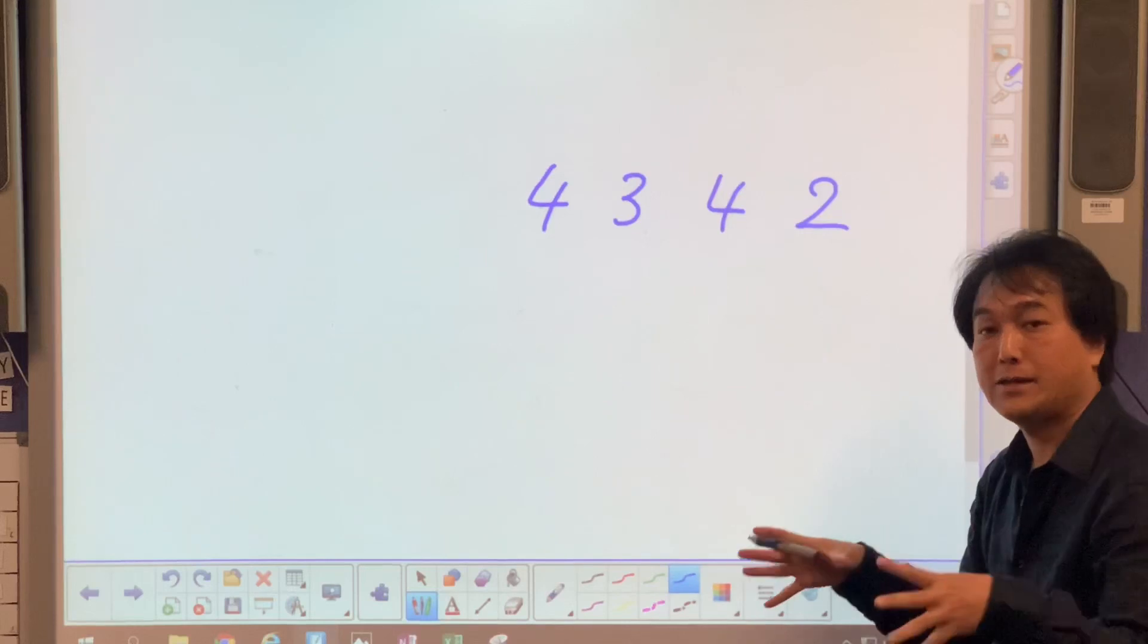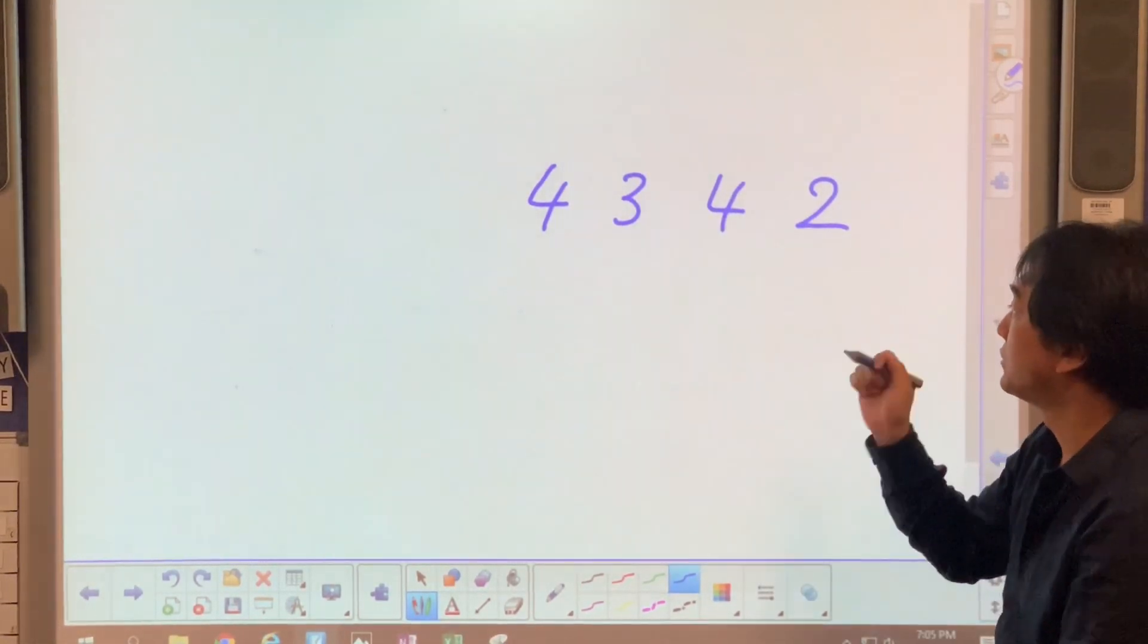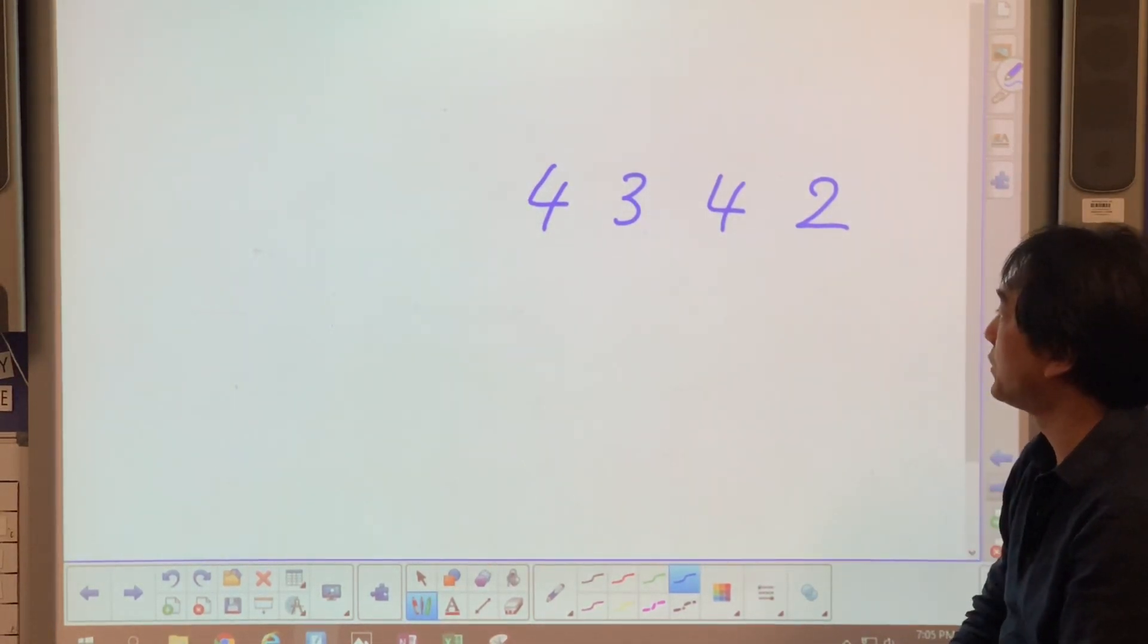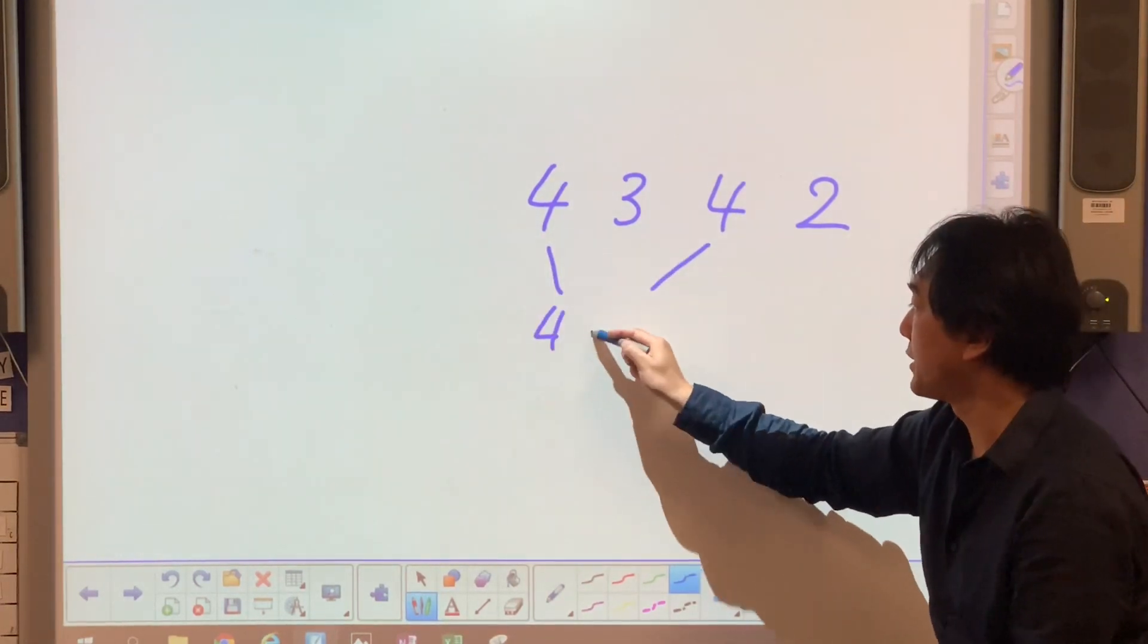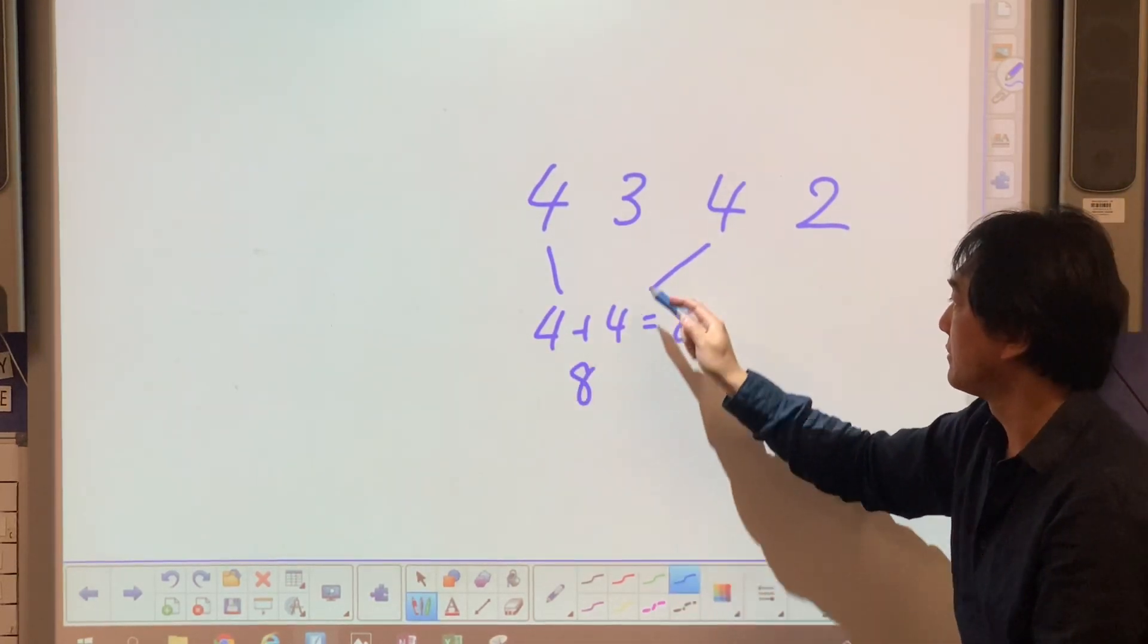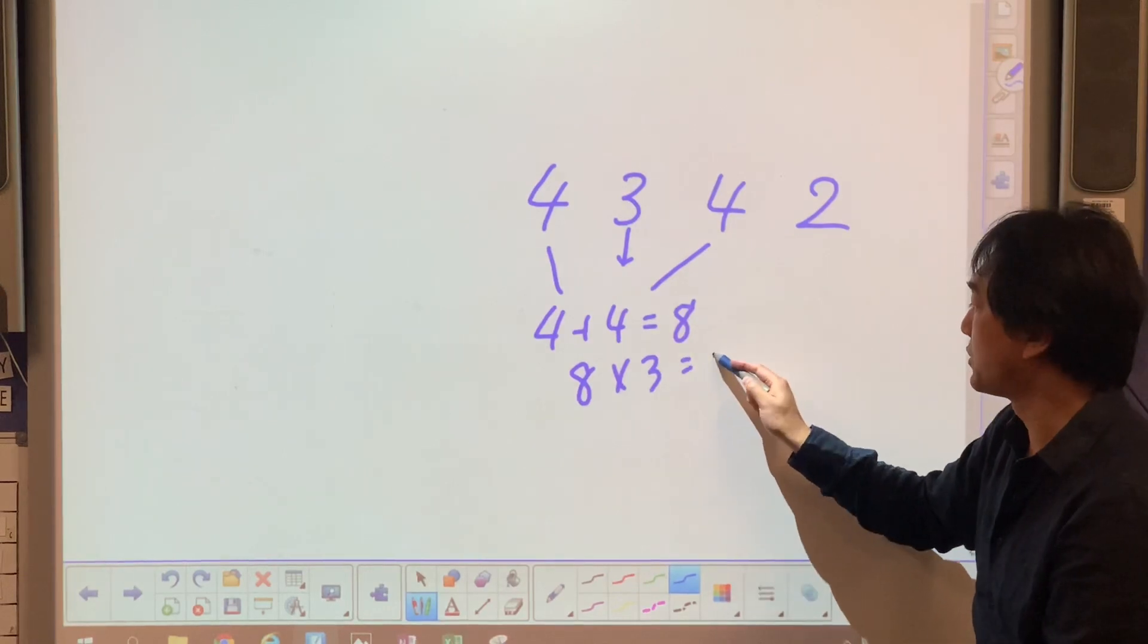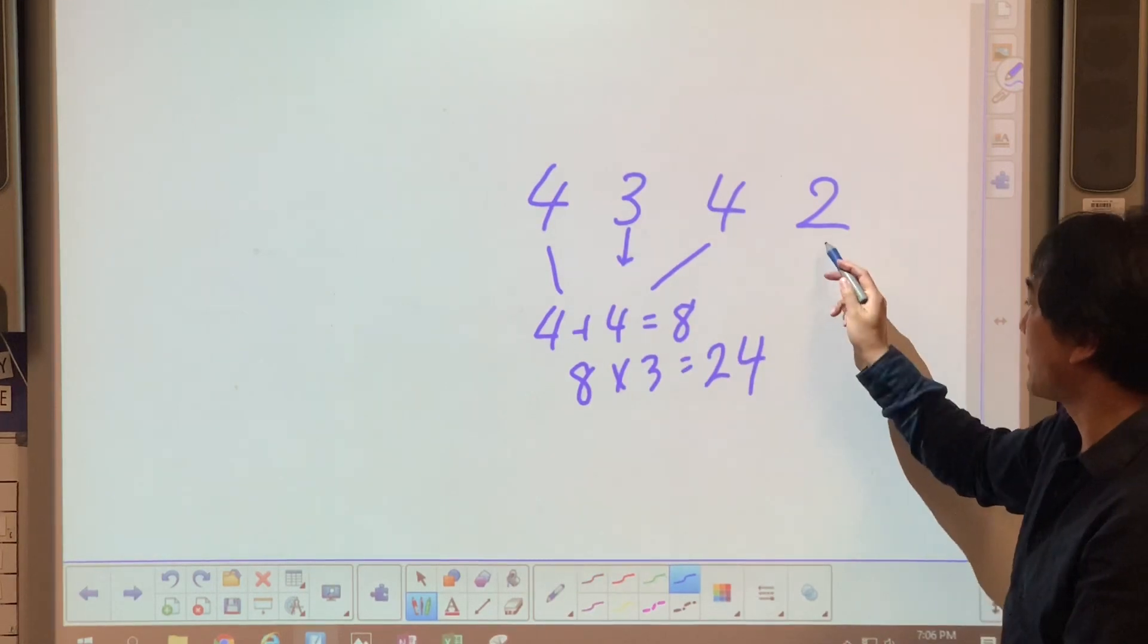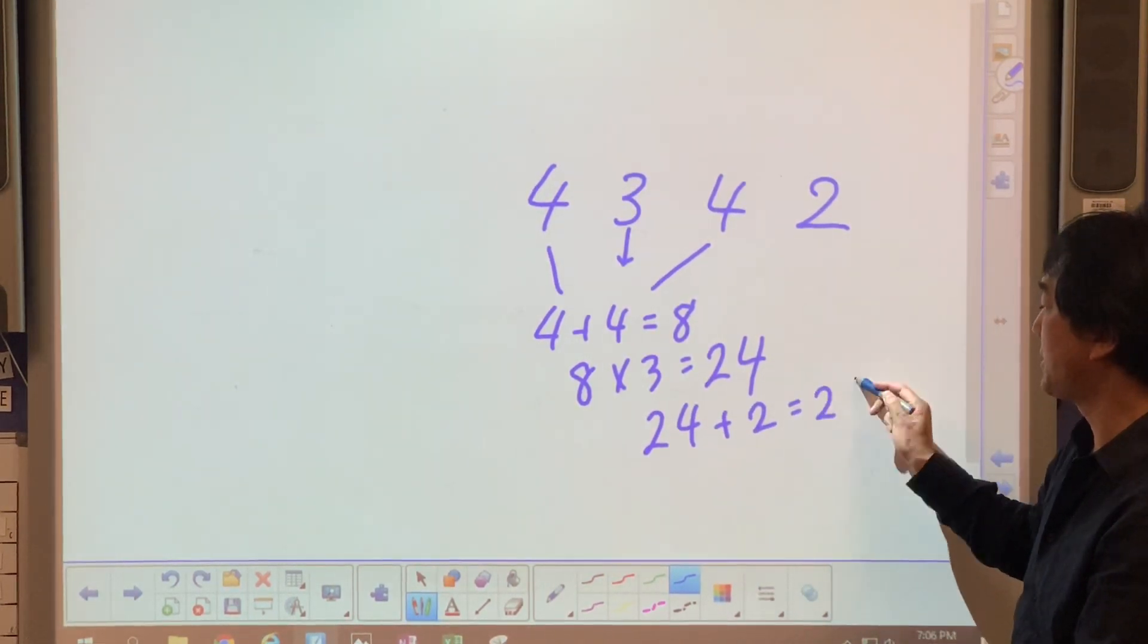I'm going to disturb the numbers. Four plus four equals eight. Then eight times three equals twenty-four. Then I'm going to add twenty-four and two, which is twenty-six.